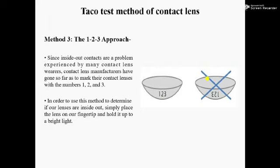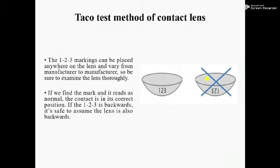Sometimes contact lens manufacturers give some mark or number like one, two, three on the lens. Place the contact lens on top of the finger and hold it up to a bright light. The one, two, three marking can be placed anywhere on the lens and varies from manufacturer to manufacturer.